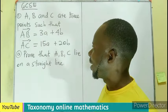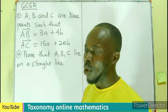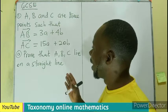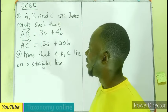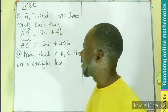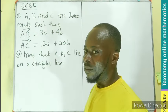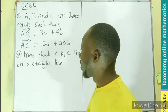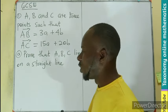We have A, B, and C. They are points. Our three points such that the vector AB is given by 3a plus 4b. Vector AC is given as 15a plus 20b.